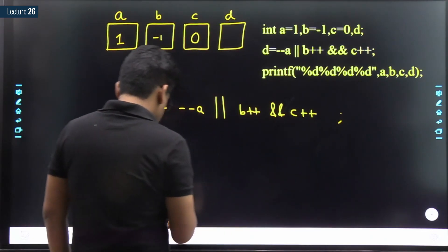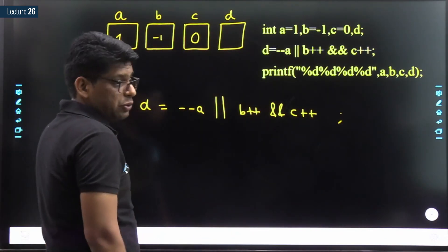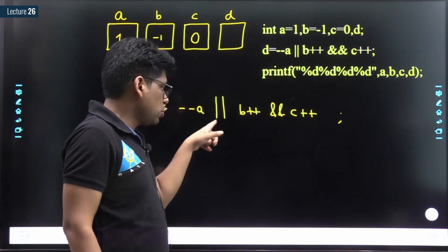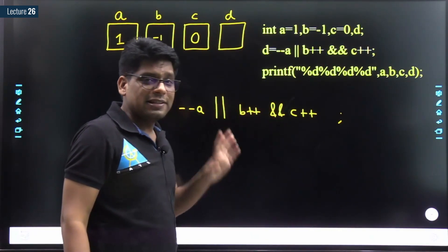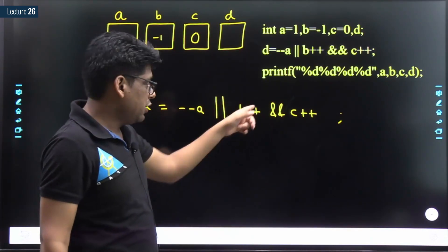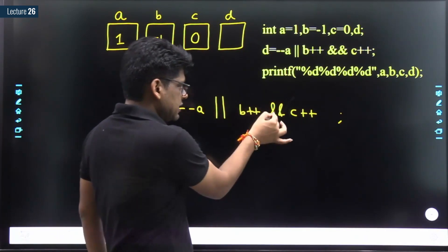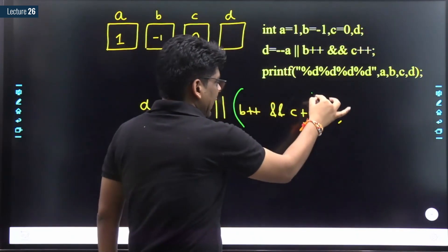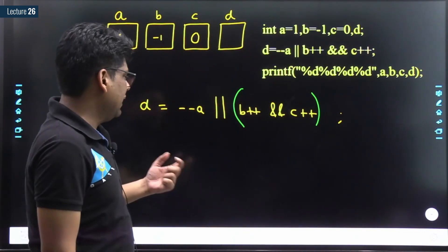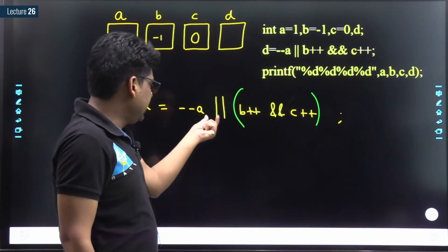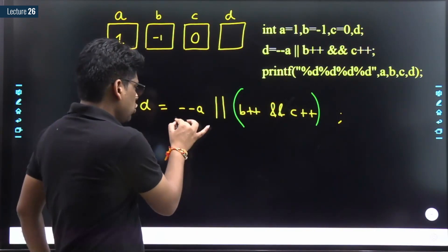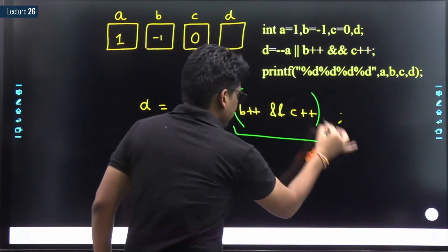Since AND has higher priority than OR, b++ is associated with AND, not OR. So for the compiler the whole expression is: (--a) OR (b++ AND c++). The compiler first evaluates --a, which is a pre-decrement, so a becomes a minus 1: a was 1, now a is 0. That 0 value is used as the first operand of OR.